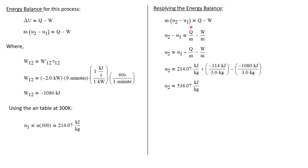Let's continue by resolving the energy balance. We had said that the mass times the change in specific internal energy is Q minus W. Let's divide both sides by the mass and move the internal energy at state one to the right side of the equation and we get U2 equals U1 plus Q over M minus W over M. We have all of these values. We know that U1 is 214.07 kilojoules per kilogram. Q is a minus 114 kilojoules. The mass is three kilograms. The work is a minus 1080 kilojoules. And again, the mass is three kilograms. So I calculate that U2 is 536.07 kilojoules per kilogram. I can take this value into the air table and at a value of 536.07 kilojoules per kilogram, I find the temperature is 730 degrees Kelvin. No interpolation was required to find that value in the table.